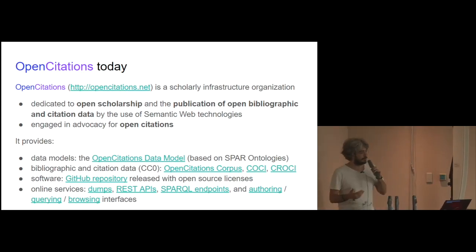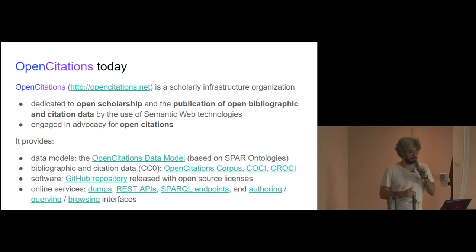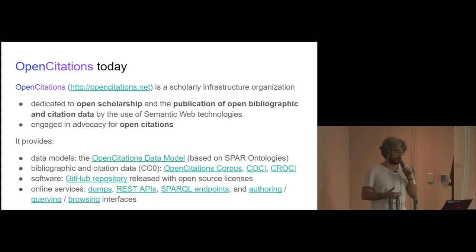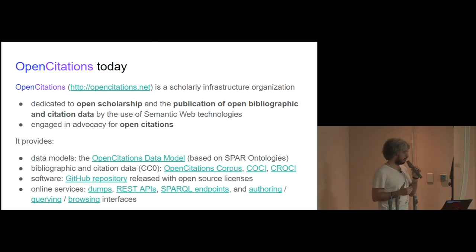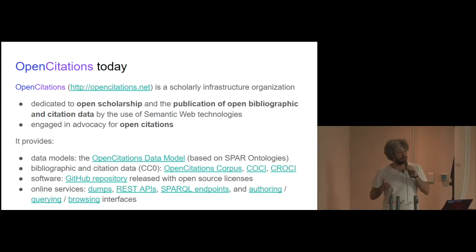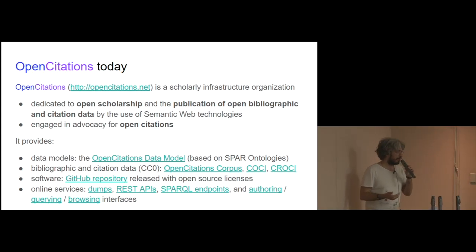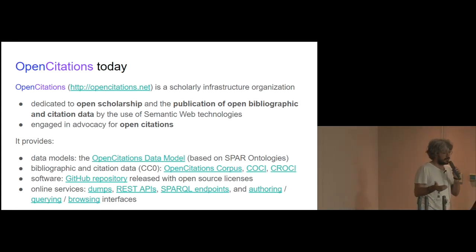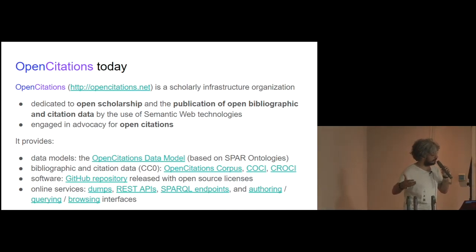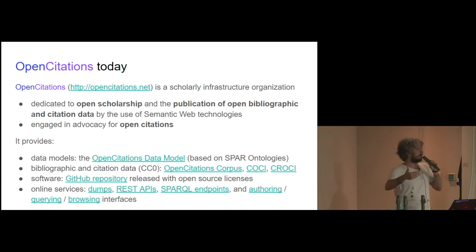A few years later we released a new infrastructure organization, still called OpenCitation. It is an infrastructure organization based in Bologna that is totally dedicated to open scholarship and to the publication of open bibliographic and citation data. In addition to the OpenCitation corpus, that was the original outcome of the project, we now are releasing a lot of other things, including models for modeling citation data, additional databases of citations, and software and services for accessing them freely online.